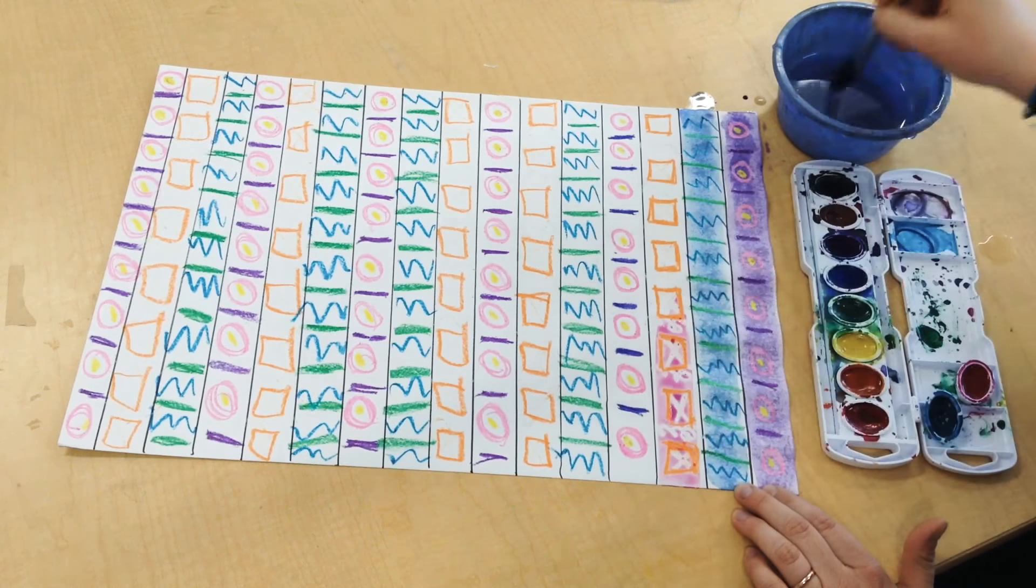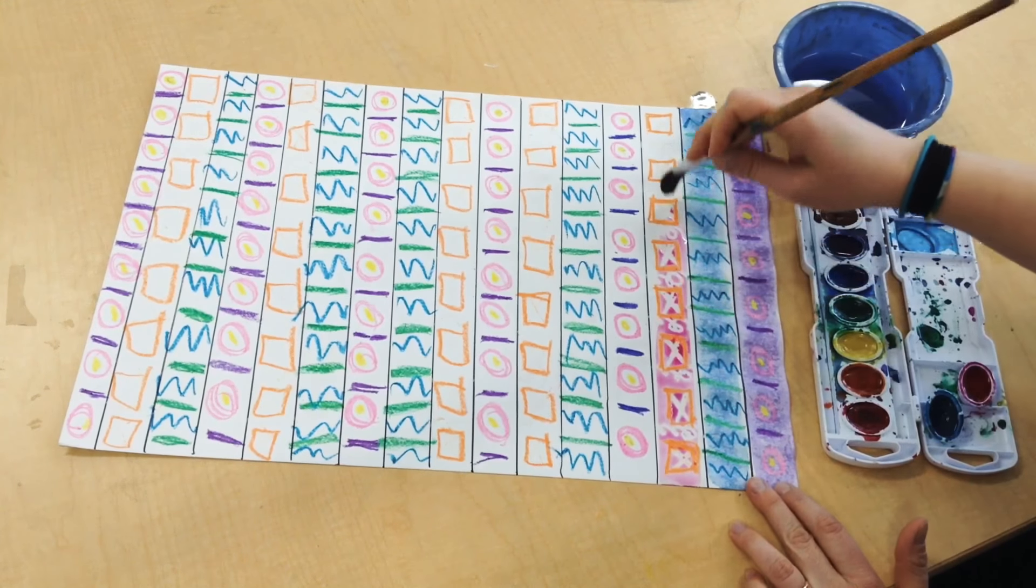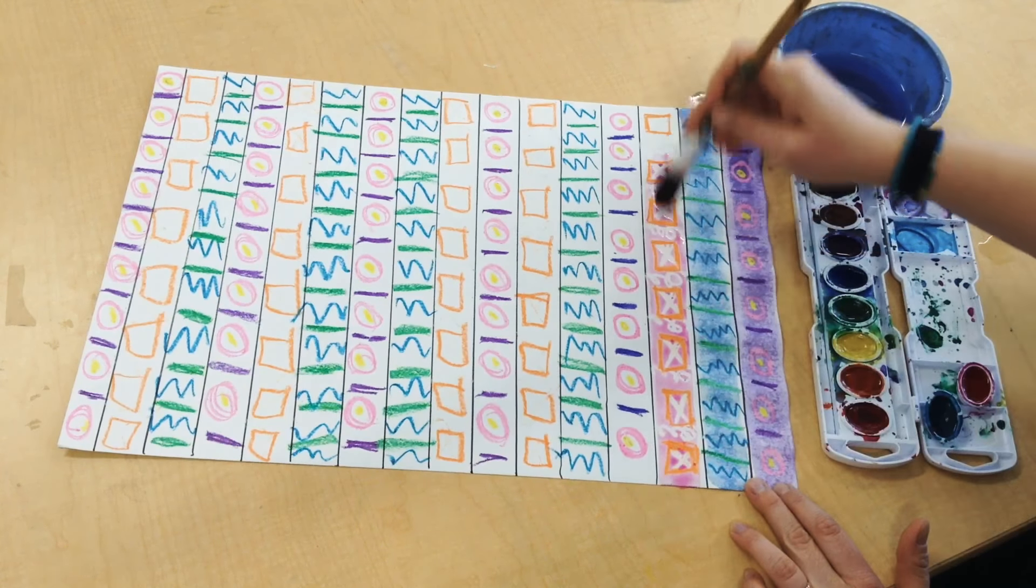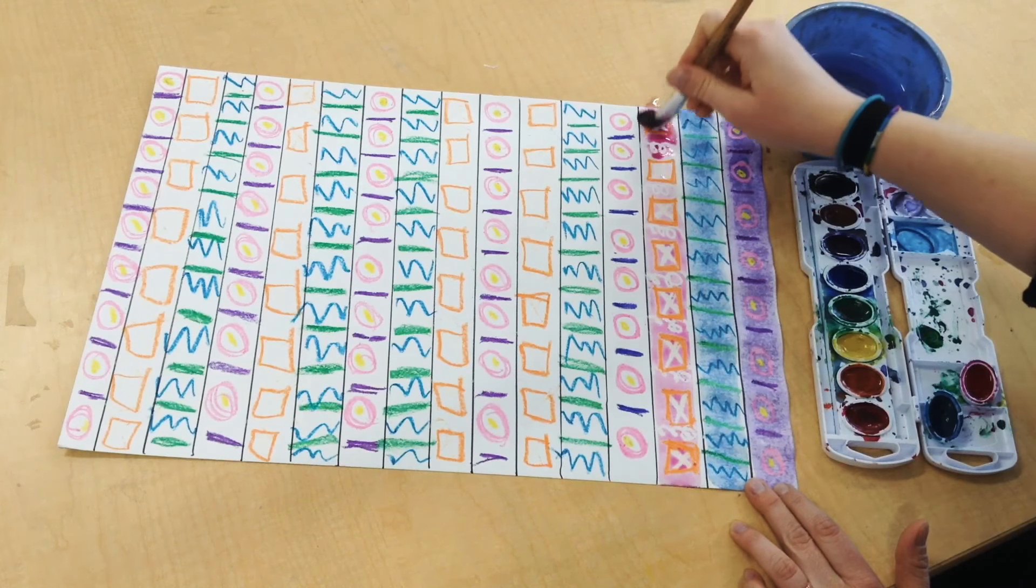Make sure your paintbrush is really wet. That's going to help your resist show up really well. You can see my white crayon is just jumping off the page now that I add my pink paint.